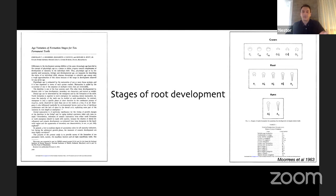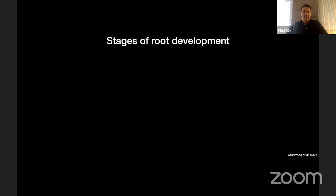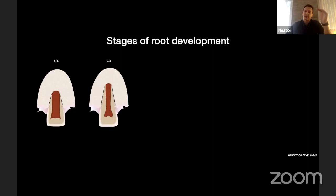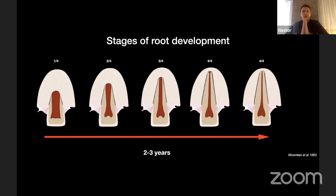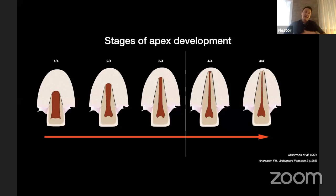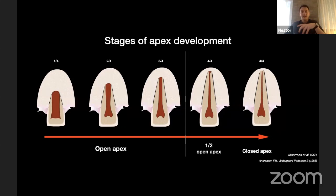Root development can be classified into one-fourth, two-fourths, three-fourths, and four-fourths of root length, and this typically takes two to three years from tooth eruption until the root is fully mature and the apex is formed. With regards to apex development, the first three categories present an open apex. When the root is fully formed, Maurice described a half-open apex and a closed apex.